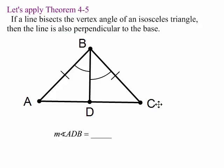Let's apply this theorem. Well, look, if you're told that you have this leg is congruent to that leg and this is an angle bisector, then that's a right angle. So, therefore, that's 90 degrees. Boy, that was real easy.